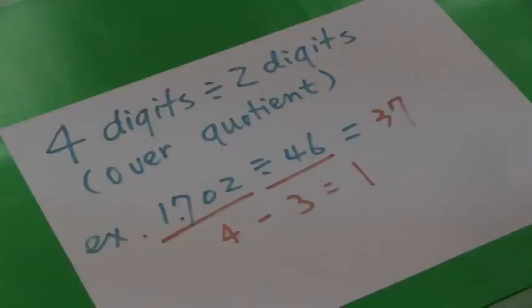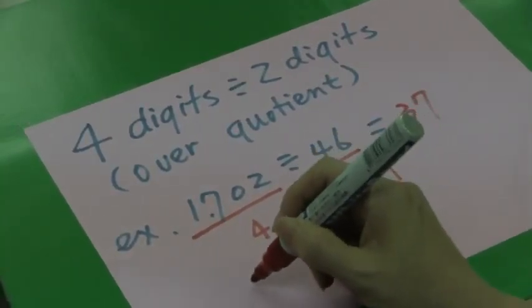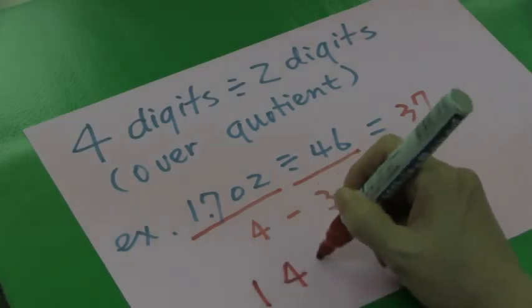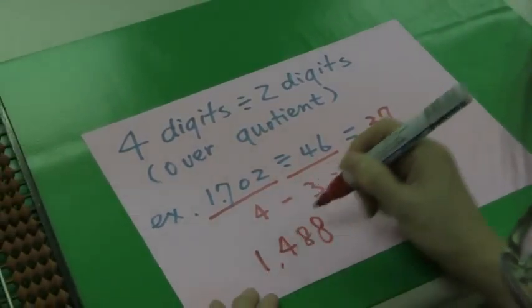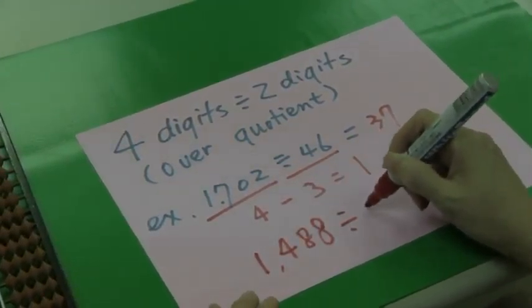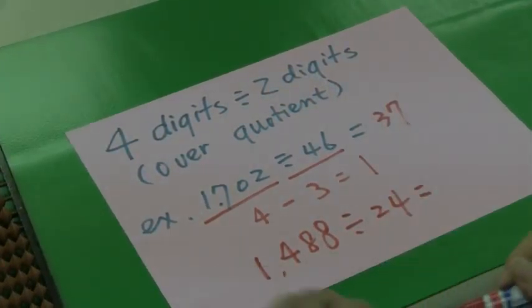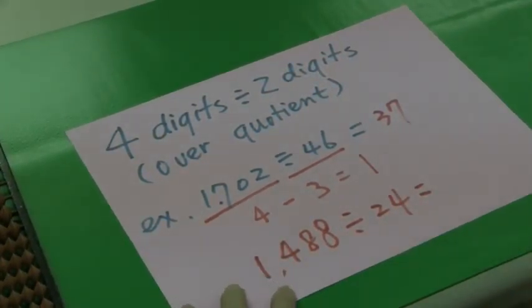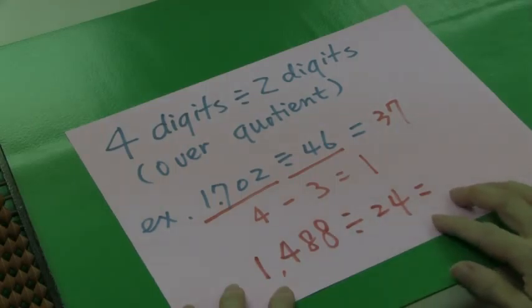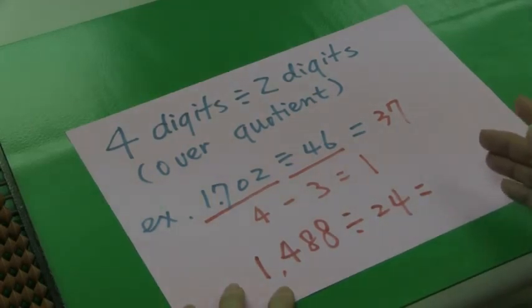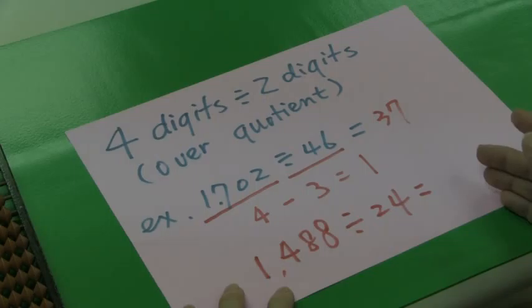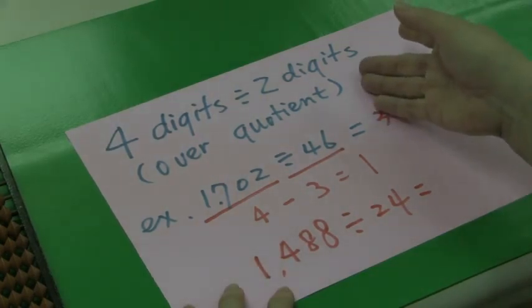If you like, you can try this question at home. 1,488 divided by 24. This question has over-quotient in it. Try it and make sure you know how to use over-quotient skill.